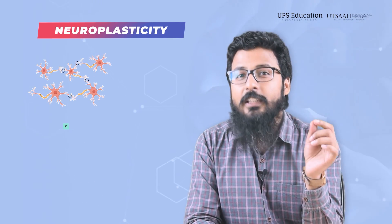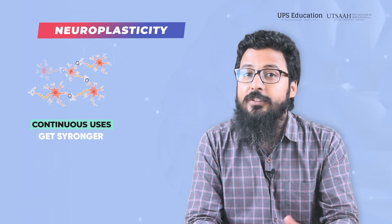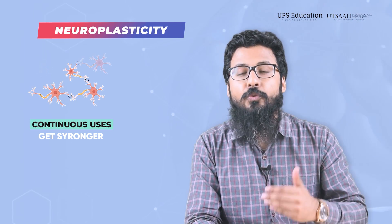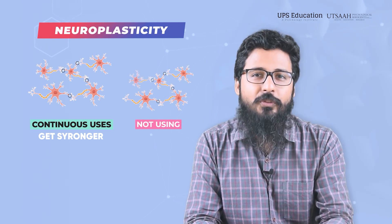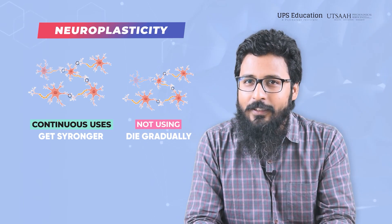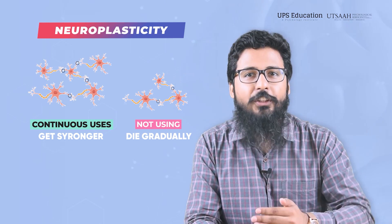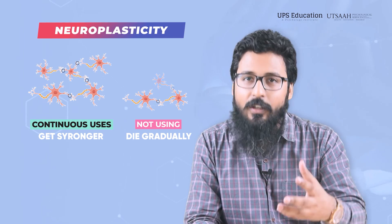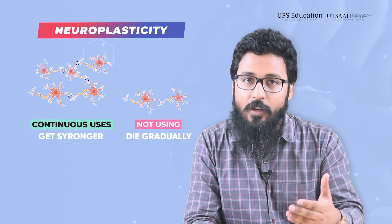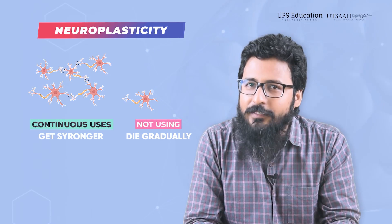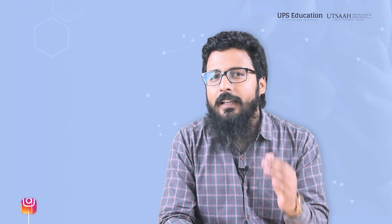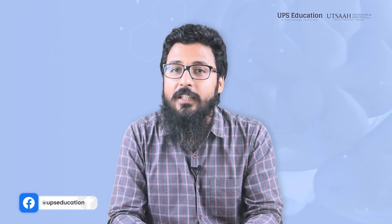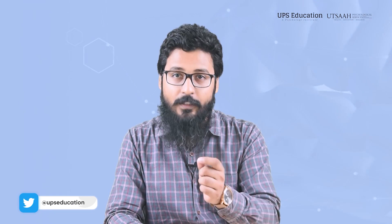Neural connections get stronger with continuous usage if we use them regularly, and those we are not using will die gradually. So if we are using a certain neural connection, it will be stronger. By creating new connections and breaking existing ones, the brain may change how it interacts with the environment. This is neuroplasticity.